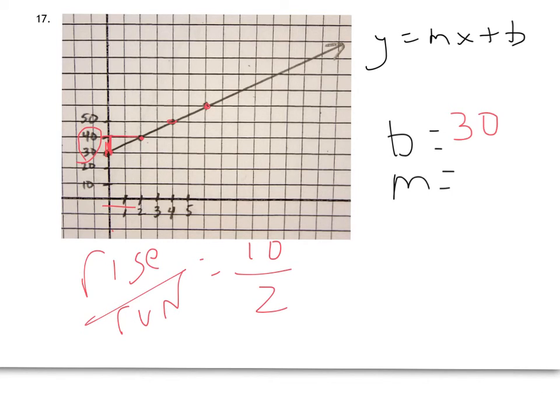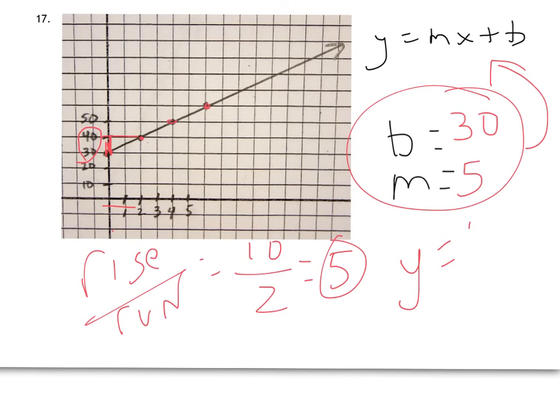So it's 10 divided by 2 which is 5. So my rate of change for this one is 5. I now have my b and my m. I can take these two, plug them into our equation. So this equation for this line is y equals 5x plus 30.